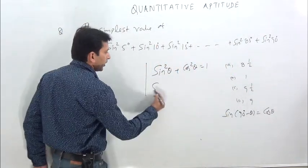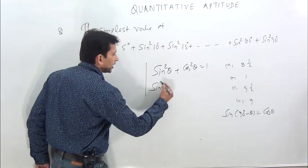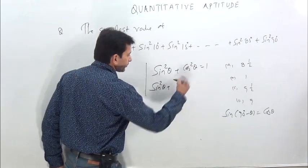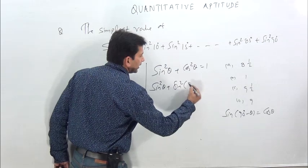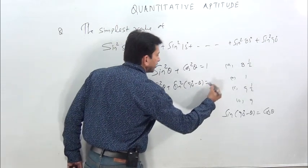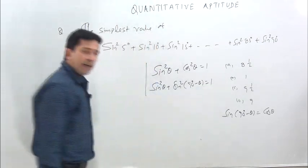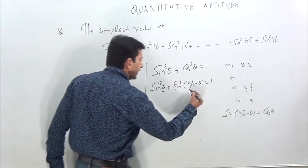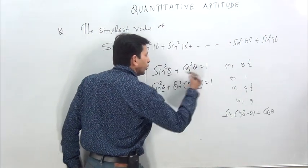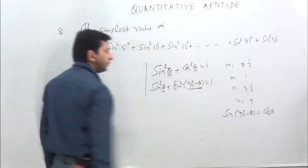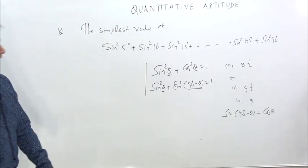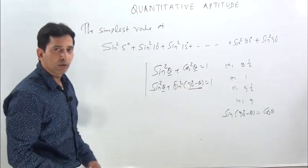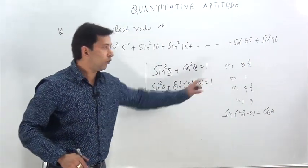This means that sin²θ + sin²(90° − θ) is also equal to 1. So here a key concept emerges: if the sum of both angles is 90°, then θ + (90° − θ) — see, they cancel out — and the result will always be 1.